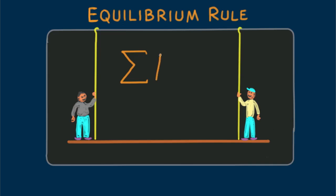The equilibrium rule states that the sum of all forces that act on a system will balance to zero if that system doesn't change its state of motion, if it's steady, for example.